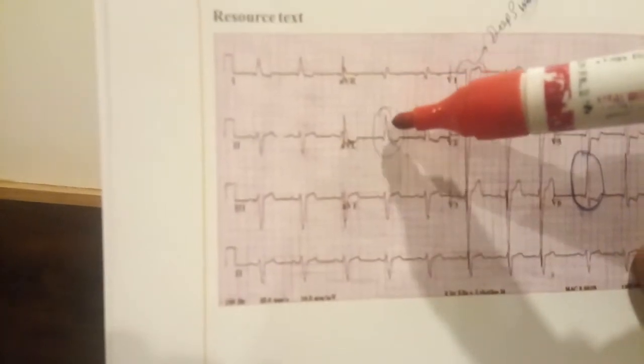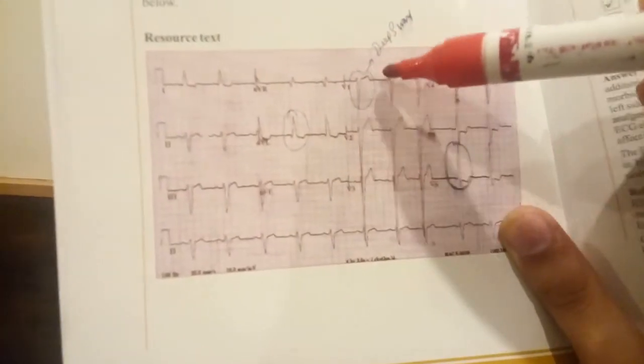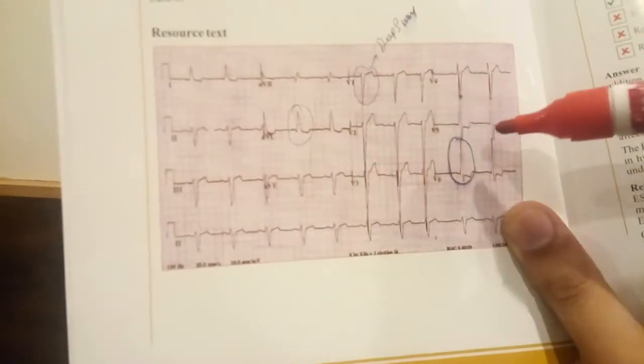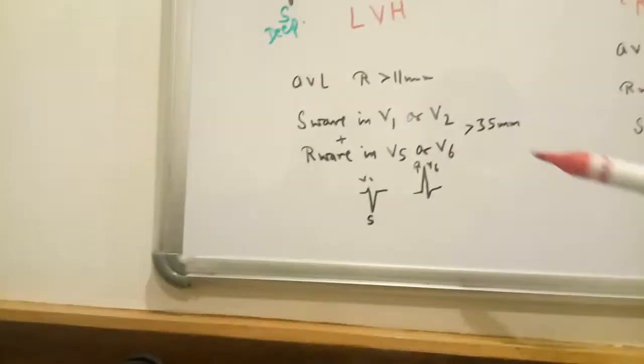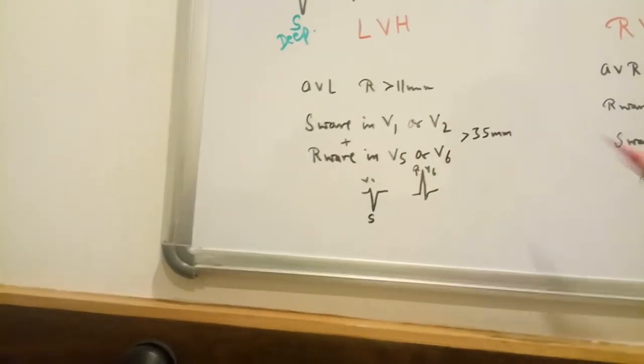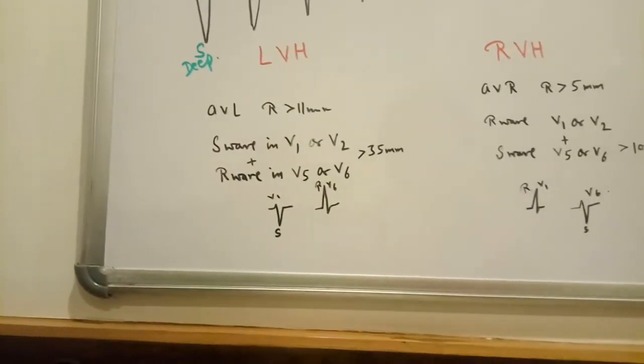AVL, see till here, small boxes more than 11. It is AVL. And in case of V1 it is nearly 16. It is nearly 20. So 20 plus 16 is 36, more than 35. V1 plus V6 or we can check V2 plus V5. So this shows the left ventricle hypertrophy. My dear friends on ECG.